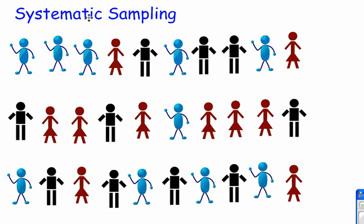Moving on to systematic sampling. We've already looked at simple random sampling, stratified sampling, and cluster sampling. If you haven't seen those videos because you're watching these out of order, you can go back and find those as well. But let's focus on systematic sampling. I still have my 30 people in my population, and I still want a sample size of 10.